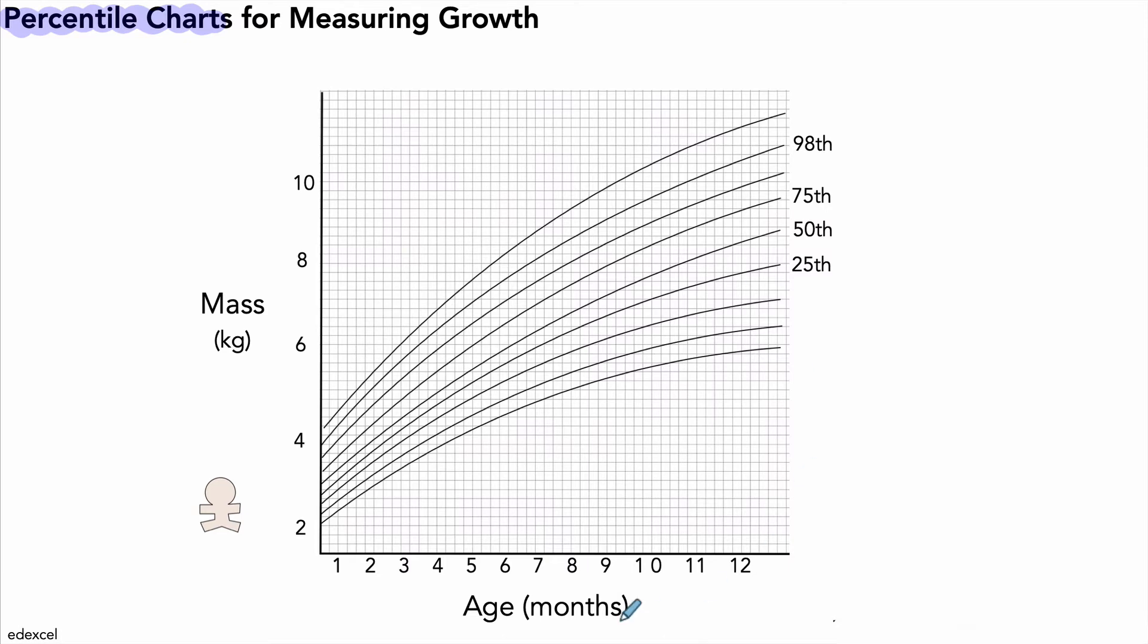Age along the bottom, mass along the y-axis, and over here on the right we have some numbers—those are what we call our percentiles. I've written in a few of those. There are more that are usually found on a chart; I've just done a few key ones.